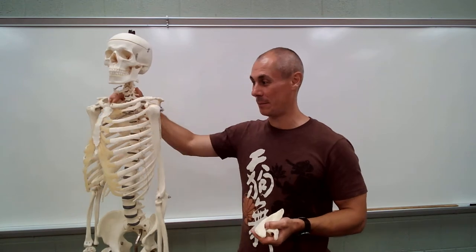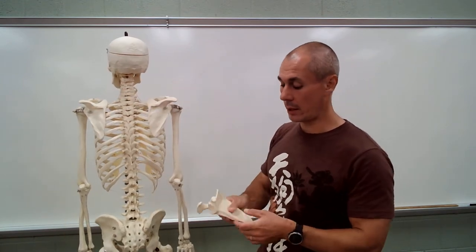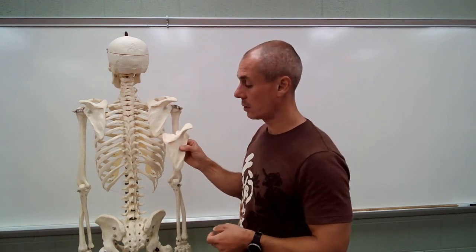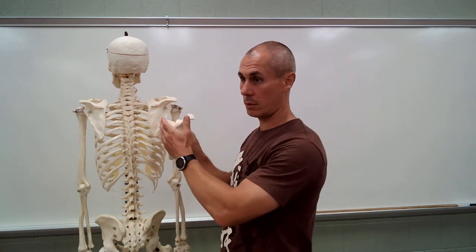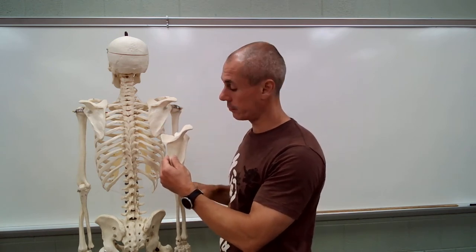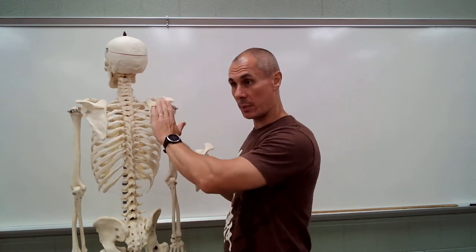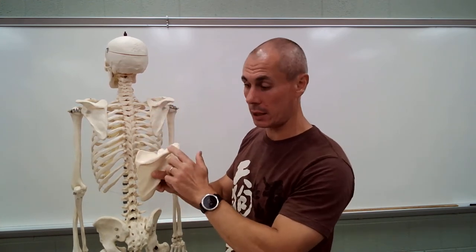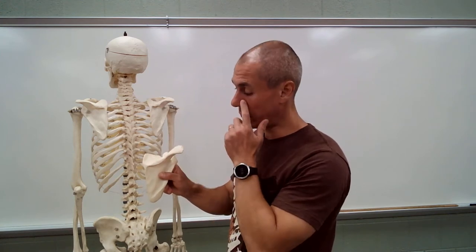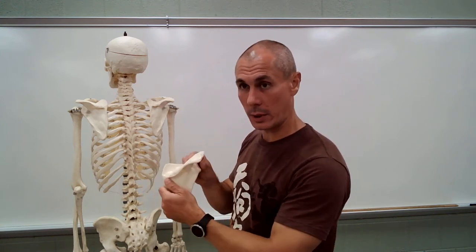Now let's move on to the scapula. What I hold in my hand is the right scapula. It has three borders: the medial, the lateral, and the superior border. The posterior surface of the scapula is separated by the spine, and you have two fossae — infraspinous, below the spine, and supraspinous. There are muscles there: infraspinatus and supraspinatus.